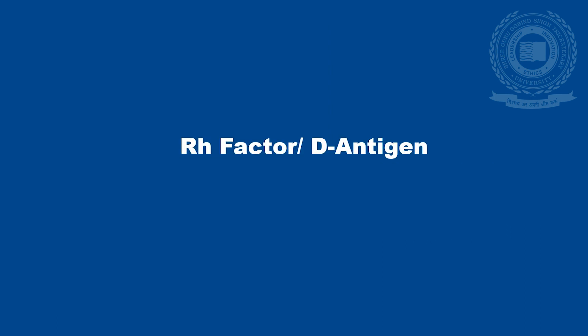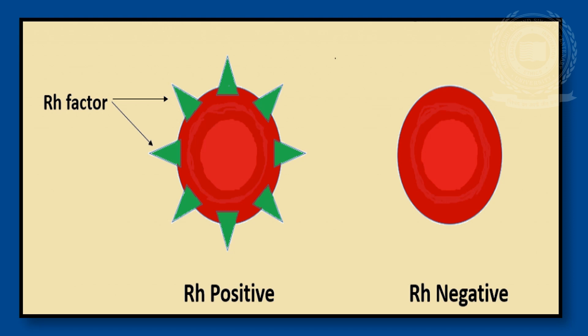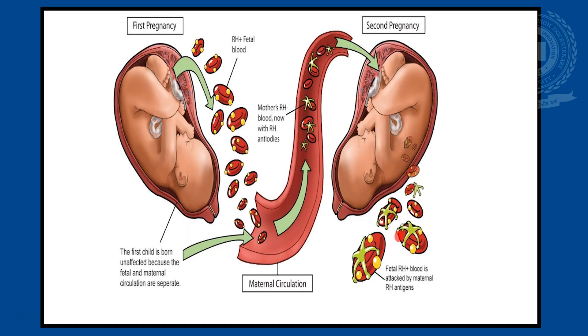This ABO blood grouping is significant in hemolytic disorders and in mismatched blood transfusion. The next important antigen is the Rh factor, also called as D-antigen. If the RBC surface has this Rh factor, then the blood group is said to be Rh positive. If the RBC surface is devoid of it, then the blood group is said to be Rh negative. It is important in the hemolytic disease of the newborn.